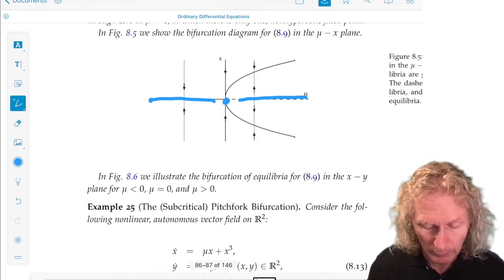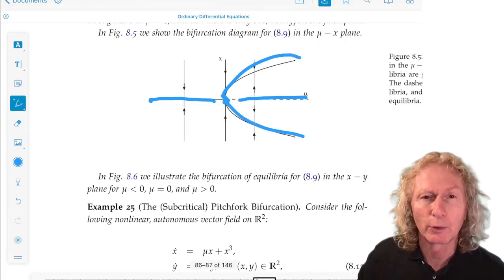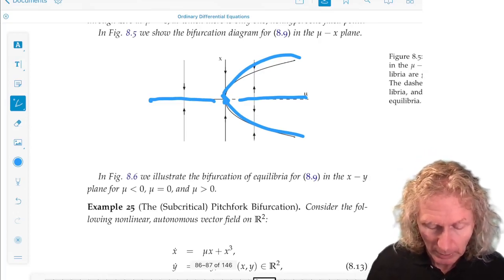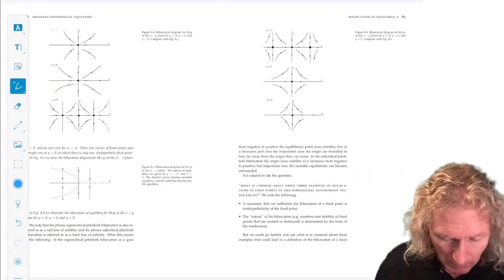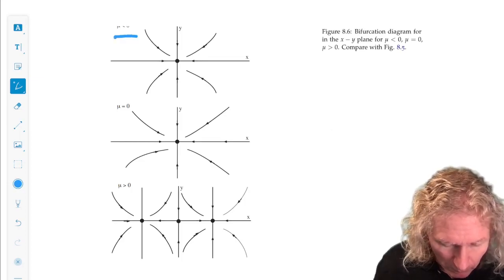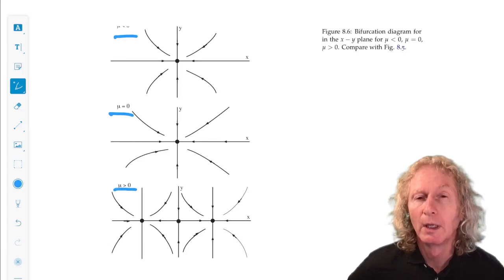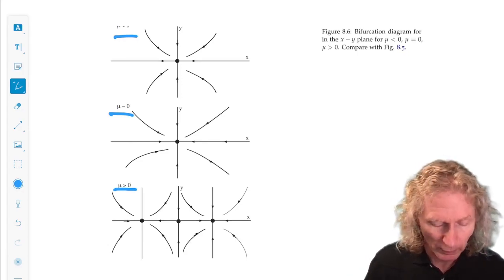And you still have two stable equilibria. That is, you don't have trajectories that are able to run off to infinity. And you can plot these in the xy plane for representative values of μ less than 0, equal to 0, and greater than 0 in this way, which is a useful exercise.